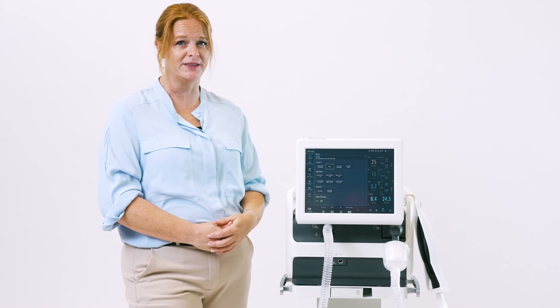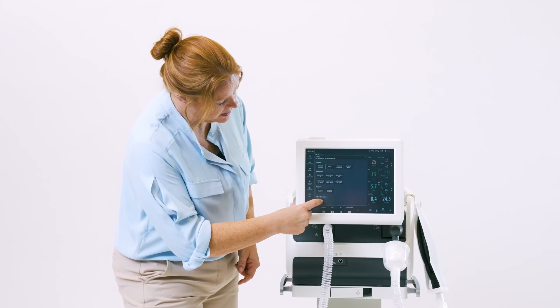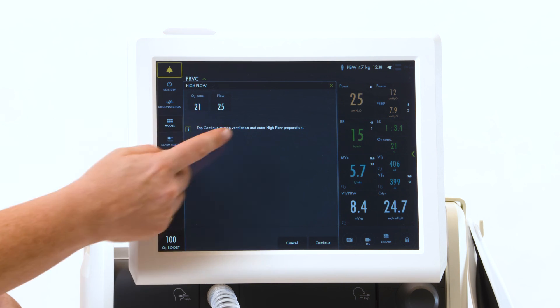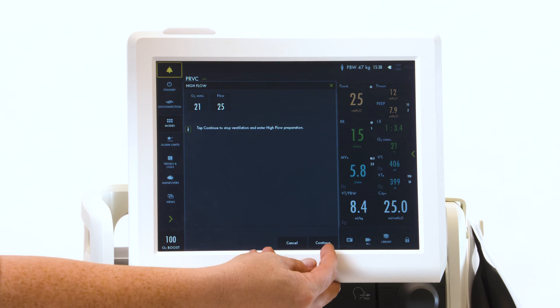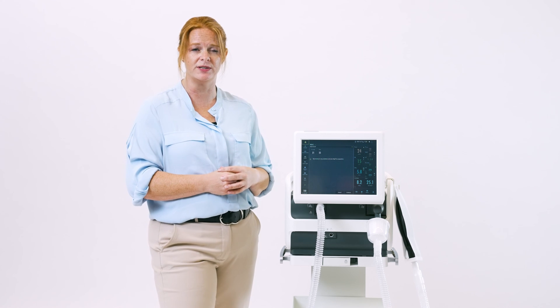High flow is located at the bottom of the screen. Touch and your settings will come up. Cancel and continue are down here. Remember, if you touch continue, it does stop ventilation to go into high flow therapy.